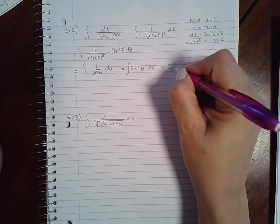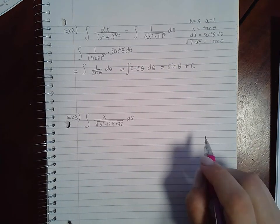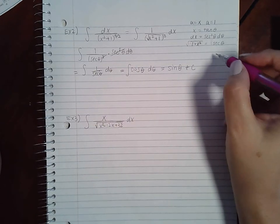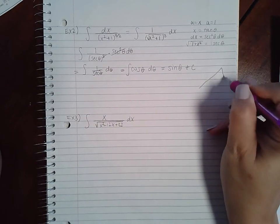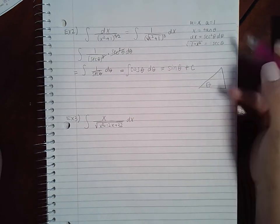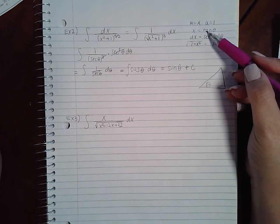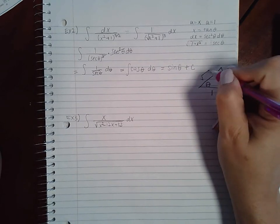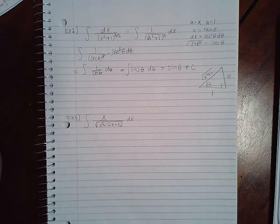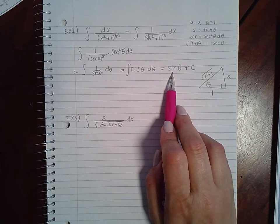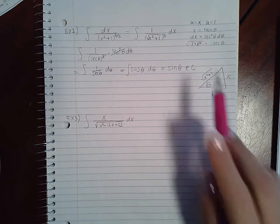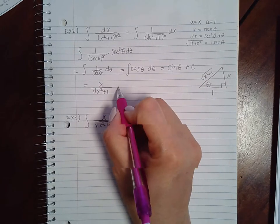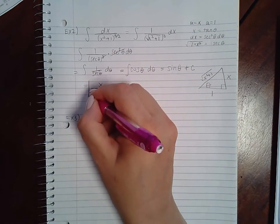The integral of cosine is sine theta plus C. Now we need to convert back to x, so we draw a triangle. Since tangent is opposite over adjacent, the opposite is x and the adjacent is 1, making the hypotenuse the square root of x squared plus 1 by the Pythagorean theorem. Sine is opposite over hypotenuse, so the final answer is x over the square root of x squared plus 1.